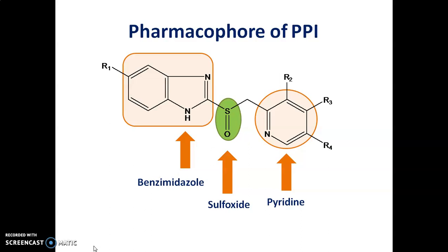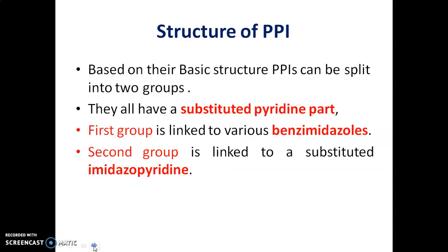Basically, proton pump inhibitors are used to treat different types of peptic ulcers as well as gastroesophageal reflux disorders. Based on their structure, proton pump inhibitors can be split into two groups. They all have a substituted pyridine part. The first group is linked to various benzimidazoles, whereas the second group is linked to a substituted imidazopyridine ring.